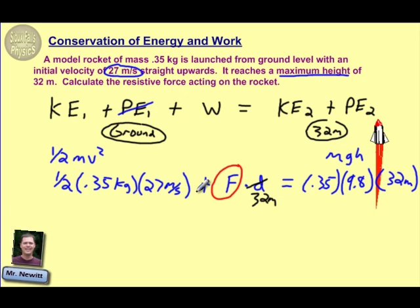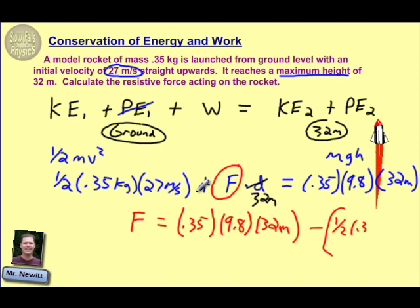Now a little bit different algebra here, because I do have some addition in this. So remember, that force is essentially going to end up equaling the 0.35 times 9.8 times 32, minus the quantity of 1/2 times 0.35 times that velocity squared, which was 27.